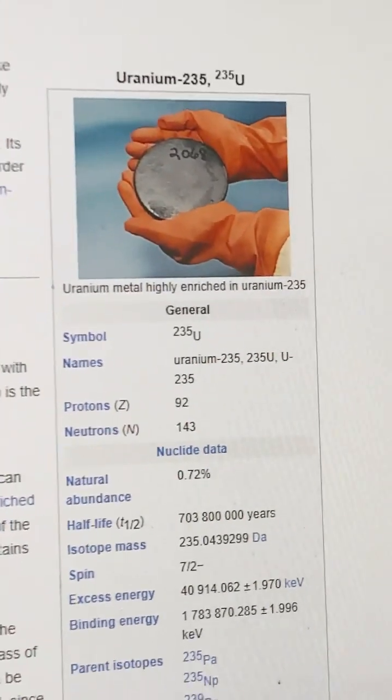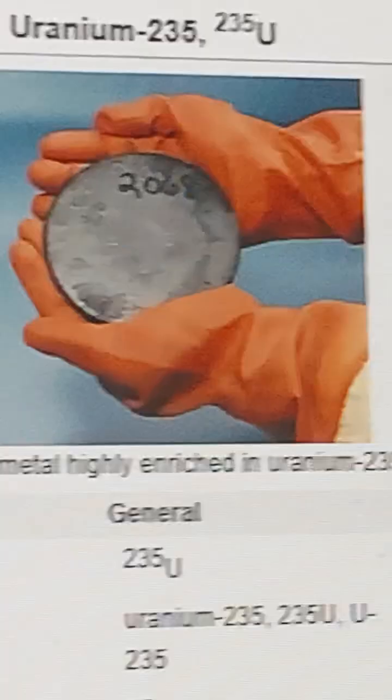Uranium-235 makes up around 0.72% of natural uranium. It is known for being fissile.